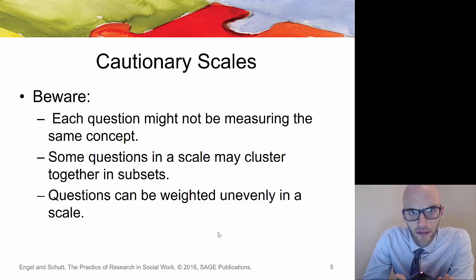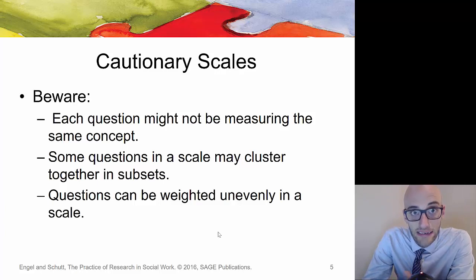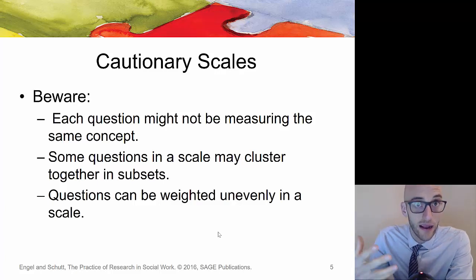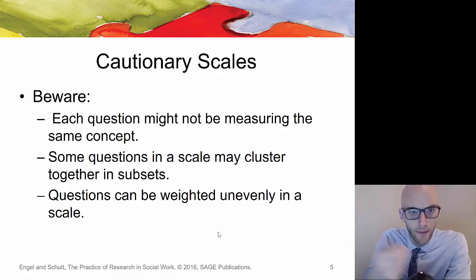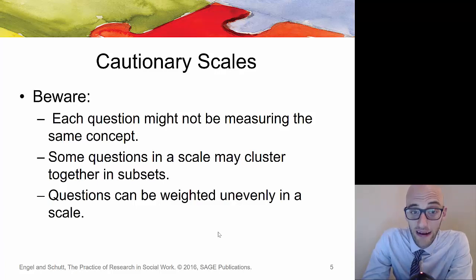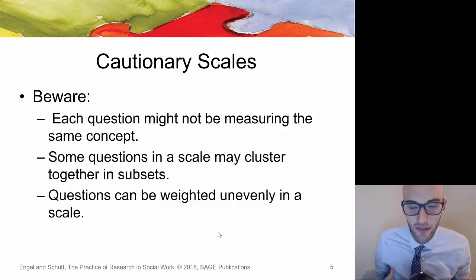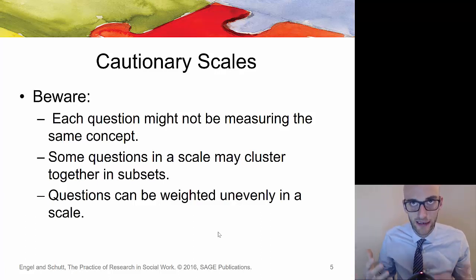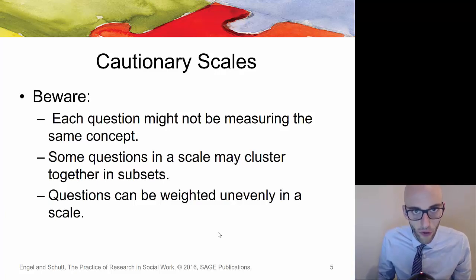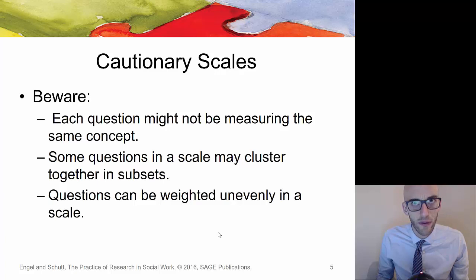Sometimes scale makers do clustering on purpose because they want to get at different components of a certain social construct. For a scale of quality of life, certain items related to quality of relationships might correlate strongly together, with multiple questions getting at the same essential subset. Also worth noting that some questions are weighted unevenly in a scale — more of an issue with larger questionnaires that have many different items, where some items may be weighed more heavily than others.